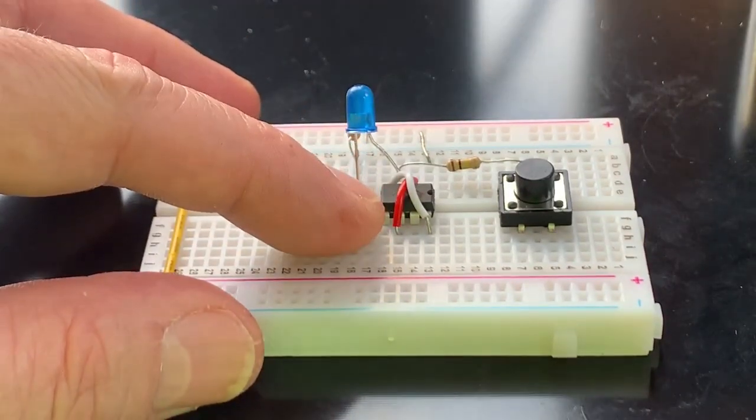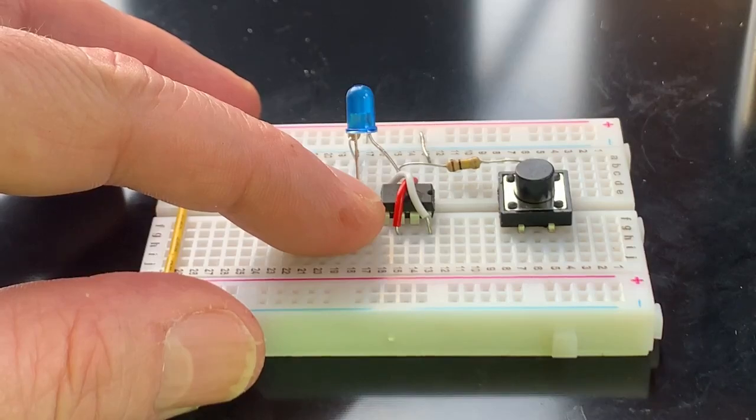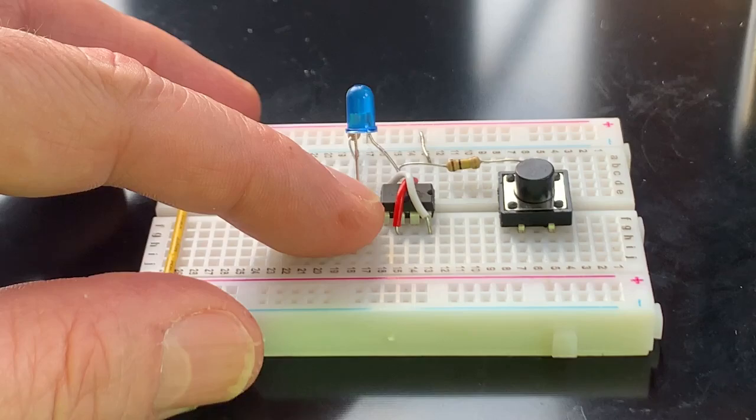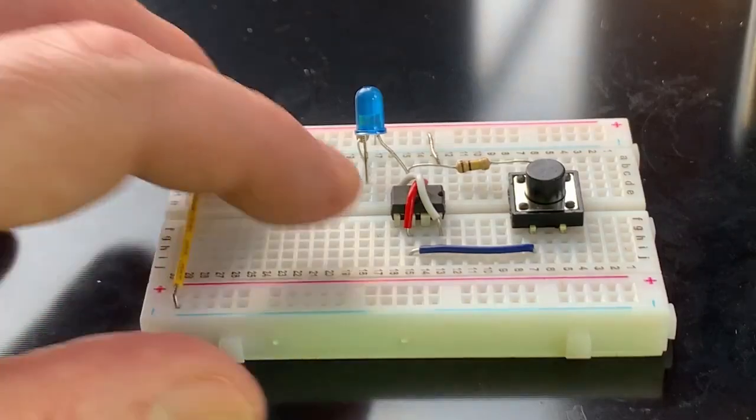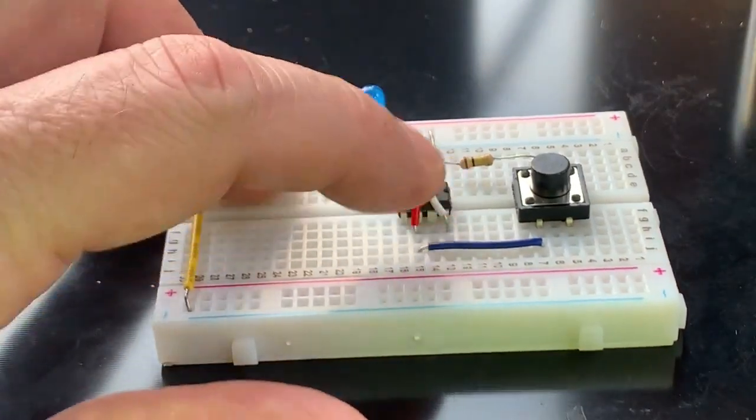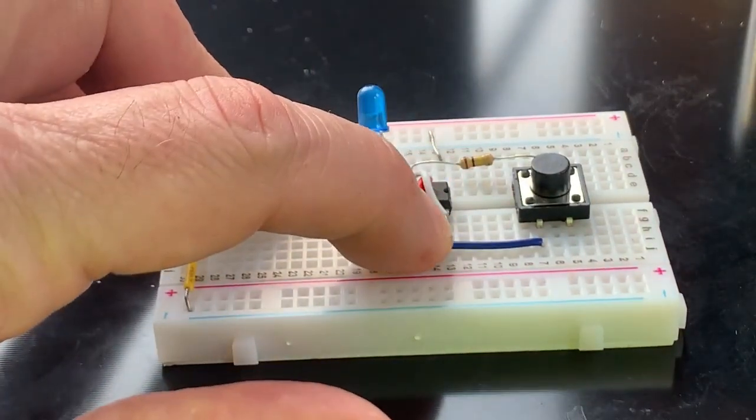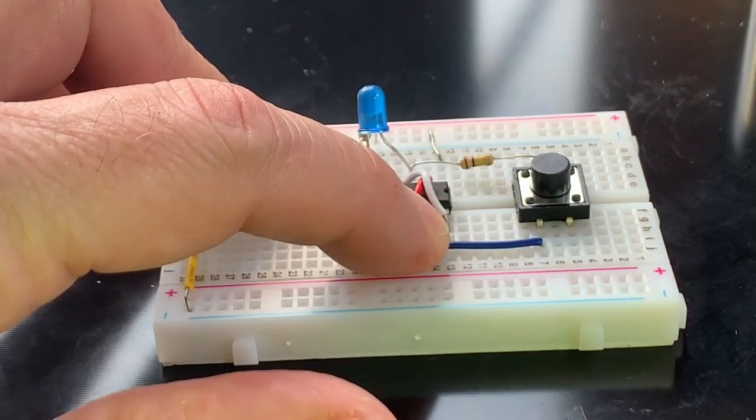Pin six again is jumped back across to pin two. And off of pin six, we're also going to run a jumper over to the switch. Pin seven is left empty. It's not used at all. And pin eight again is jumped back across to pin four.